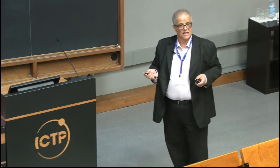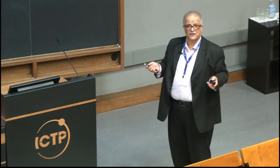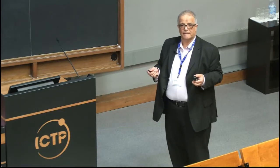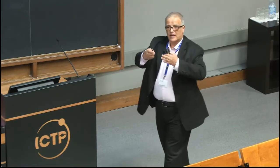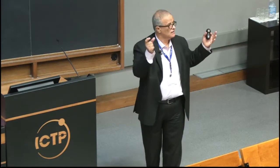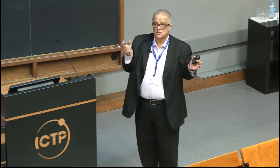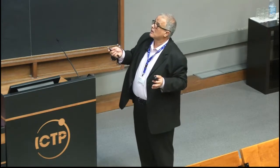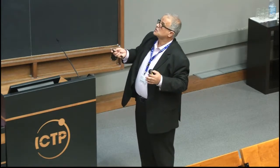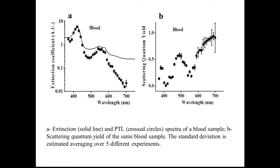Normal blood and blood with sickle cells have different shapes — the scattering is very different. So the scattering spectrum for sickle cell disease blood should be different from normal blood. This could be an interesting method and application for blood disease detection. It's a very interesting method — just to show the possibilities.